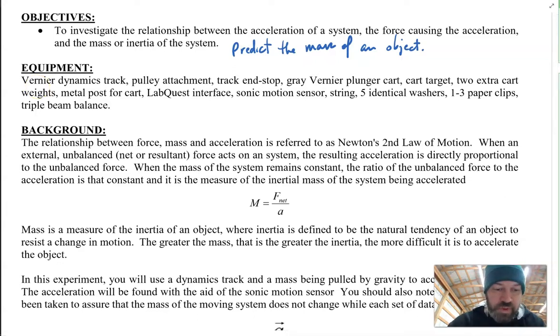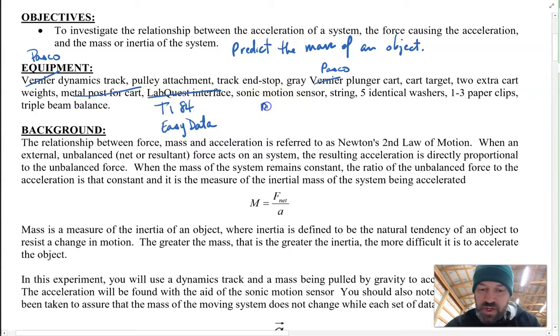As far as the equipment that we're using, we're not using a Vernier Dynamics track, but we're using the Pasco track from Class. We'll use pulley attachments, end stops, the Pasco plunger cart, the target, cart weights, post for the cart. We're going to be using the TI-84 EasyData app. It's a little bit easier than installing the LabQuest software. We have a motion sensor. This is like a radar that's going to be recording the velocity and position of an object.